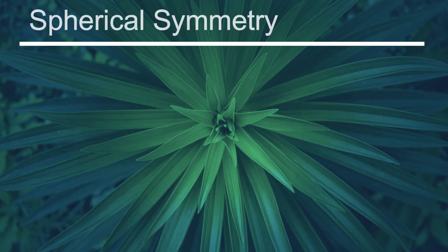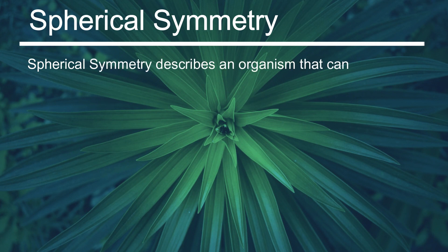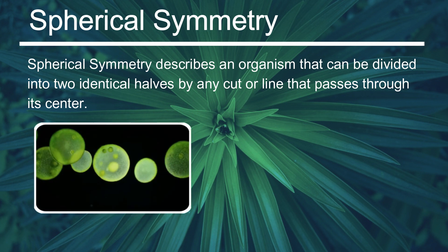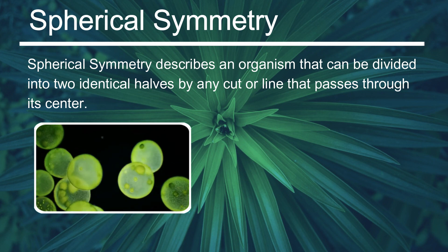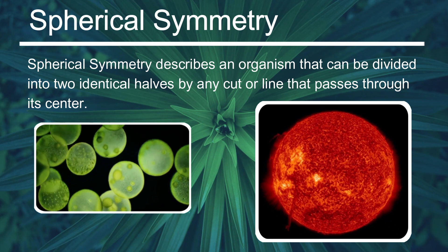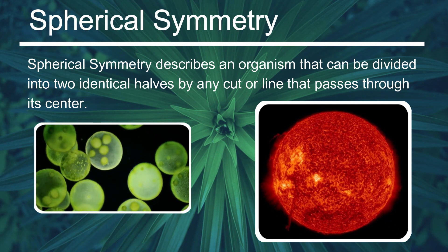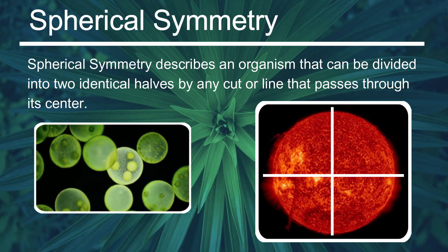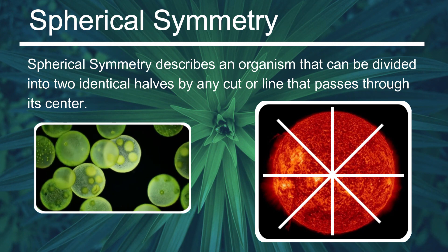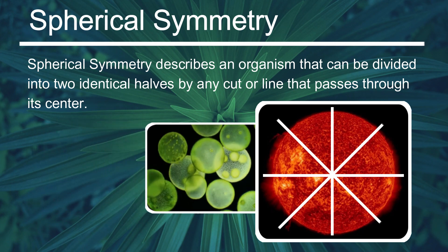Another type is spherical symmetry, which describes an organism that can be divided into two equal halves by any cut or line passing through its center. An organism that exhibits spherical symmetry must be shaped like a sphere. For example, you can think of the sun as having spherical symmetry — if you cut the sun into two halves through its core, each half would be almost identical. We can apply the same idea to living organisms.